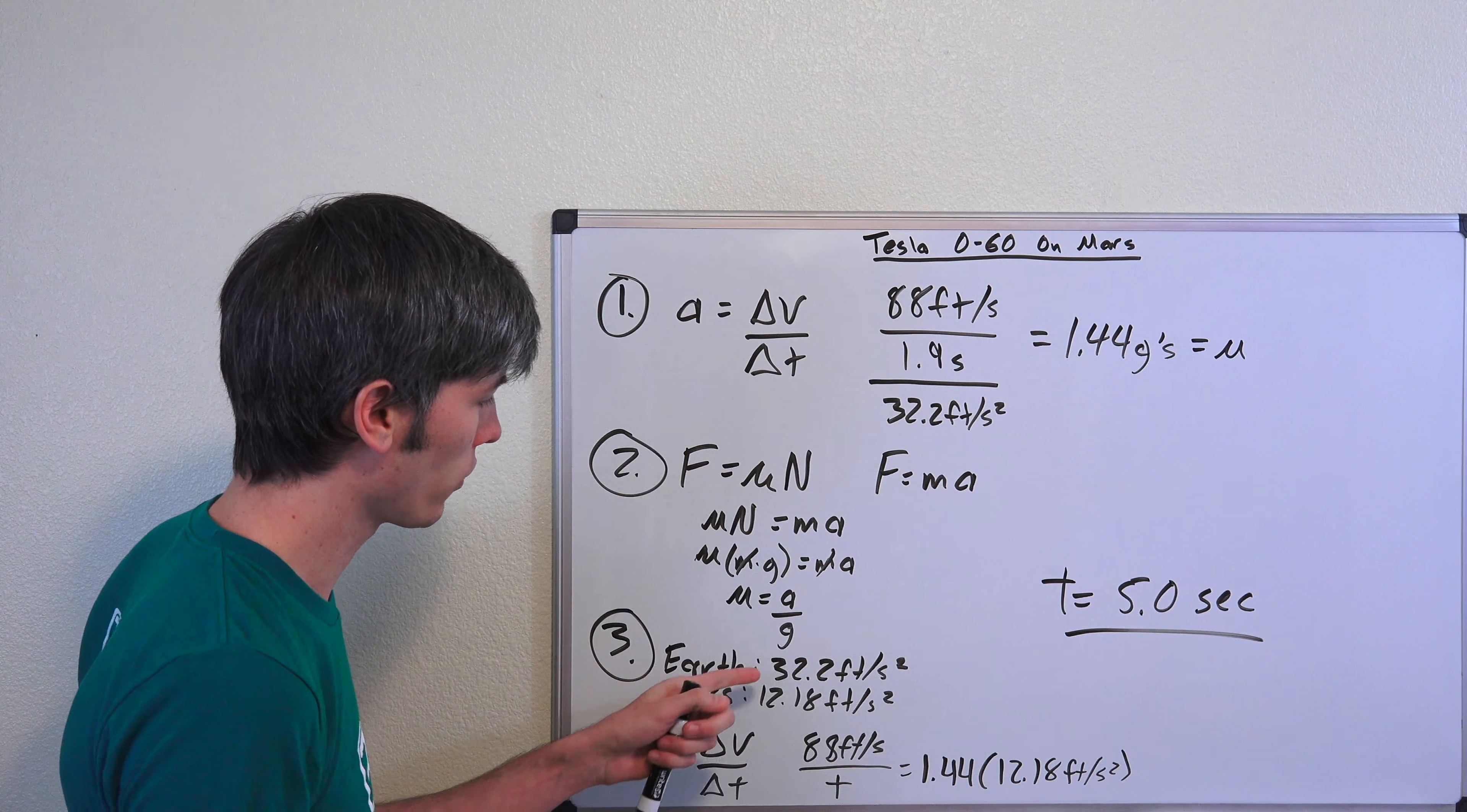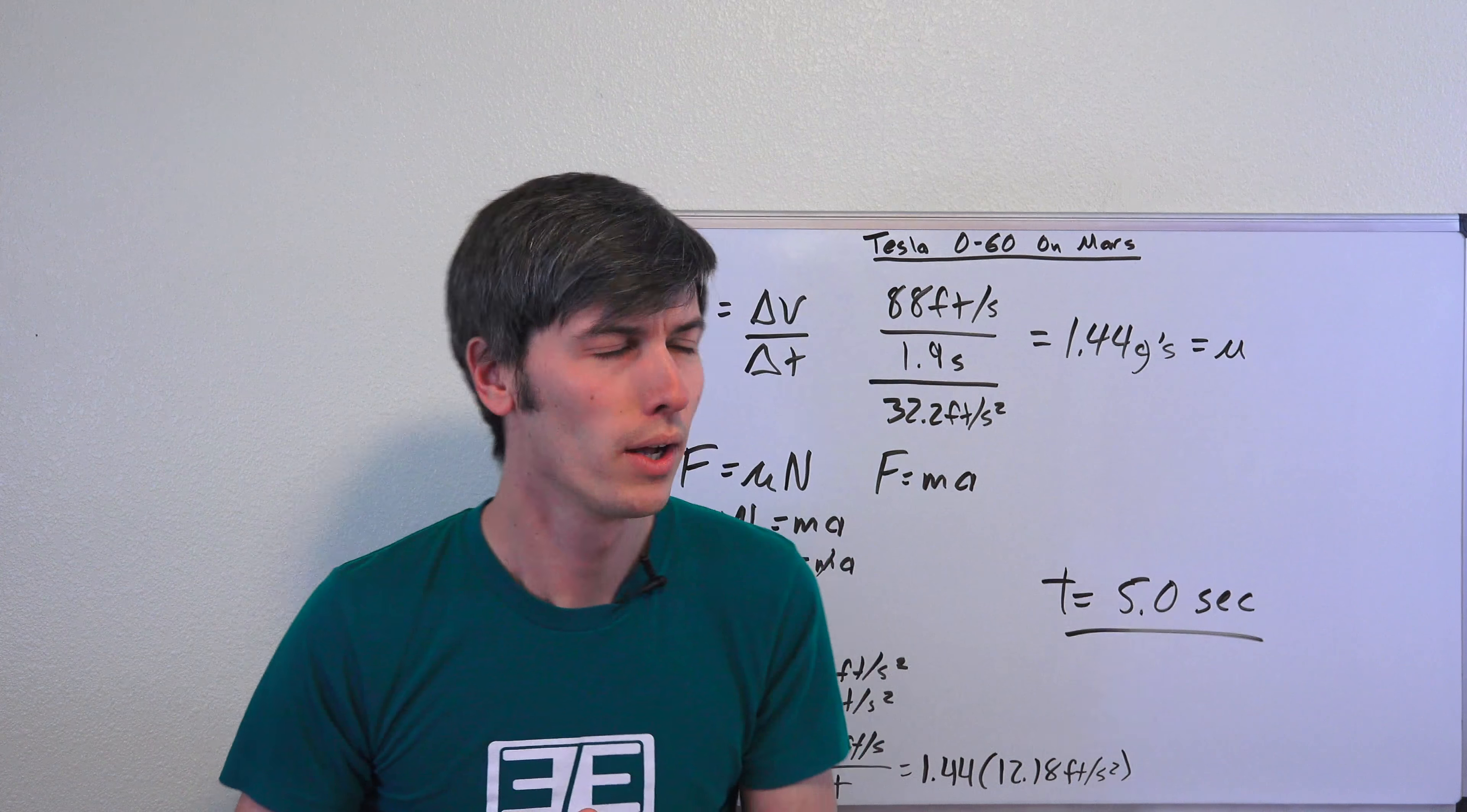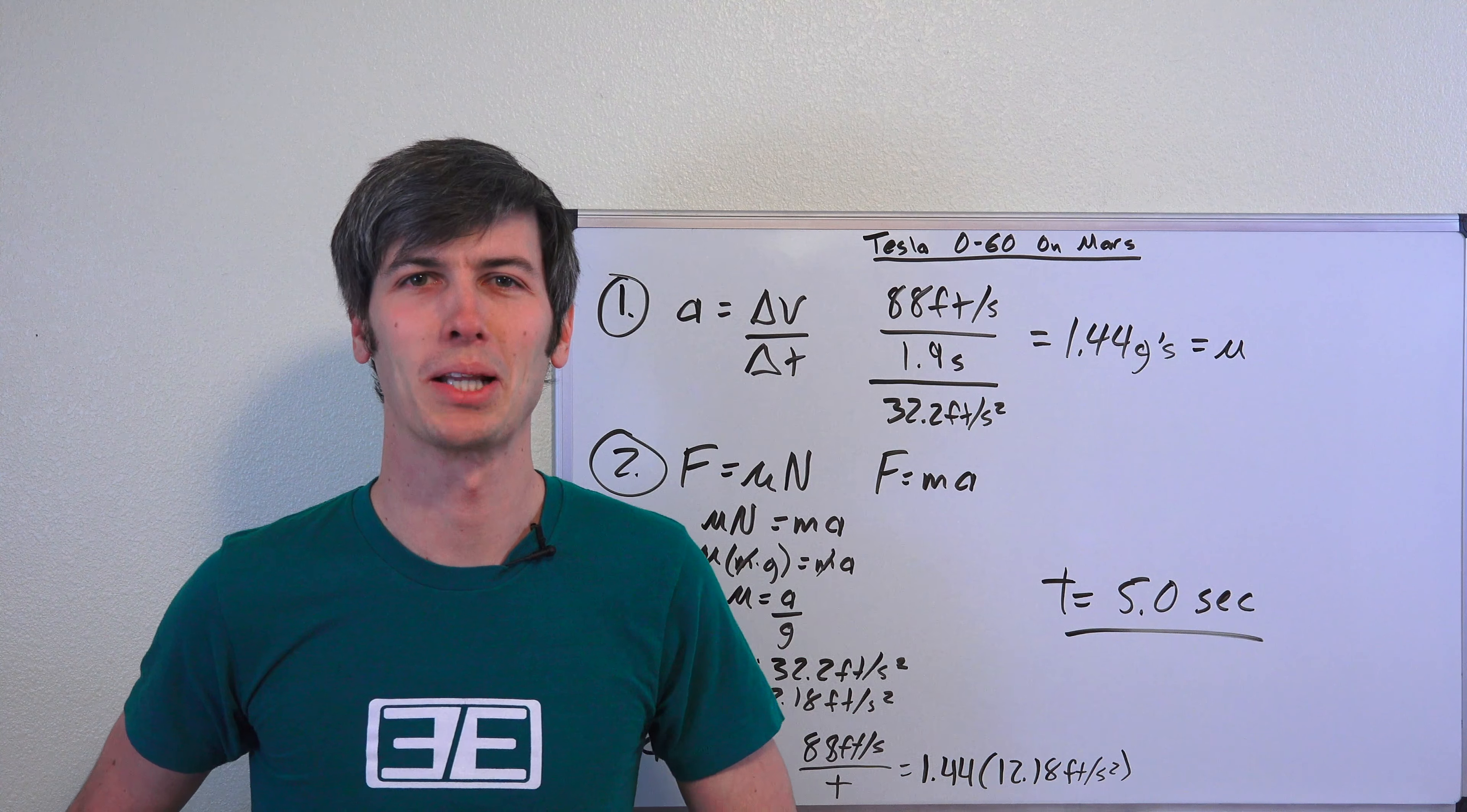And the simple way of doing this, you can just take Earth's gravity divided by Mars gravity and multiply by the 0 to 60 time, and that will give you this 5 seconds. But this shows you exactly how that's done. So now all of you have that burning question answered for you: How fast could a Tesla Roadster accelerate to 60 miles per hour on Mars? It would only take 5 seconds. Thank you all for watching. If you have any questions or comments, feel free to leave them below.